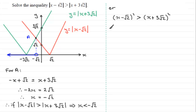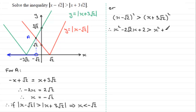Expanding the left bracket: x squared, minus 2 root 2 x, plus 2. Expanding the right bracket: x squared, plus 6 root 2 x, plus 18 — because 3 squared is 9 and root 2 squared is 2, so 9 times 2 is 18. So we have x squared minus 2 root 2 x plus 2 is greater than x squared plus 6 root 2 x plus 18.